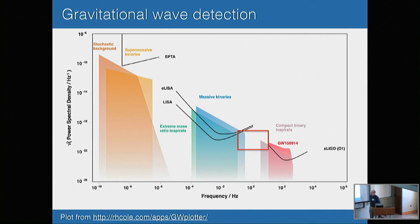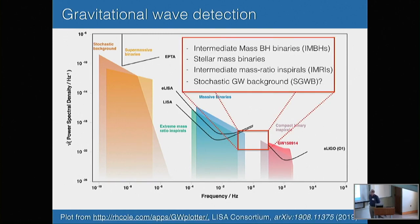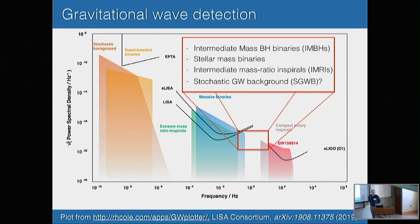We identified this mid-band or decihertz region, motivated in part by work from Mark Kasevich and collaborators on atomic interferometer-based gravitational wave detection, which is very related to clock-based detection. People are now identifying interesting sources in this band: in addition to seeing LIGO events weeks or months early, you'd expect to see intermediate mass black hole binaries, stellar mass binaries earlier on, intermediate mass ratio inspirals, and potentially a stochastic gravitational wave background. We were trying to think: can you use optical lattice clocks in space to build a detector that looks in this frequency band?